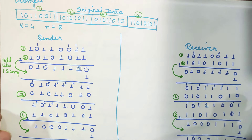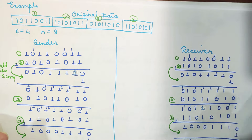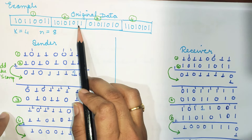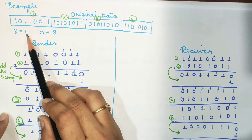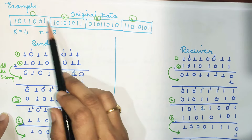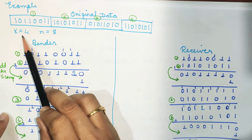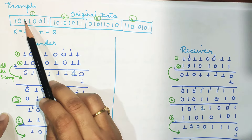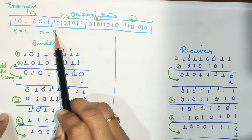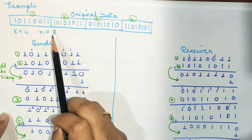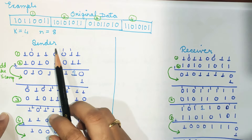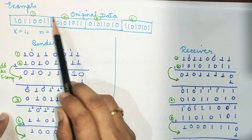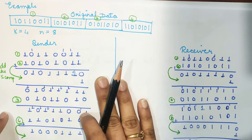We will see one simple example so that you can easily understand how the checksum works. So for example, if we want to send a data — this is our original data that we want to send. As you can see, we are using 4 blocks, so K is 4, and N is 8, meaning the number of bits is 8 — each block having 8 bits. For easy understanding of how I am adding the blocks, I have labeled them 1, 2, 3, and 4.